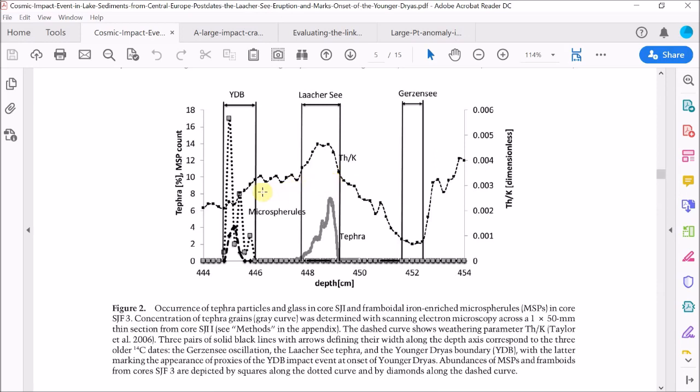Nevertheless the Younger Dryas impact does seem to line up with this change in climate here. Does it reflect a warming or a cooling? It's hard to tell but judging from the peak in the tephra probably corresponding to a warming not a cooling. So once again this record is indicating that if anything the Laacher See eruption correlates with a warming trend not a cooling trend. So I think it's clear from this lake sediment and the GISP2 ice core the Laacher See volcanic eruption had nothing to do with the Younger Dryas mini ice age.